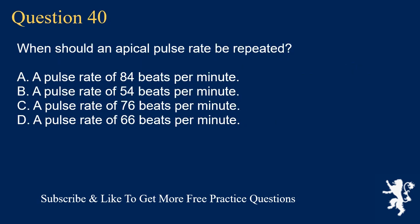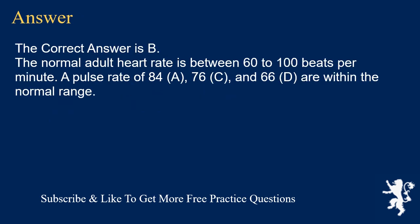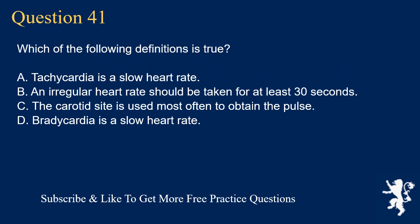Question 40. When should an apical pulse rate be repeated? A. A pulse rate of 84 beats per minute. B. A pulse rate of 54 beats per minute. C. A pulse rate of 76 beats per minute. D. A pulse rate of 66 beats per minute. The correct answer is B. The normal adult heart rate is between 60 to 100 beats per minute. Pulse rates of 84, 76, and 66 are within the normal range.